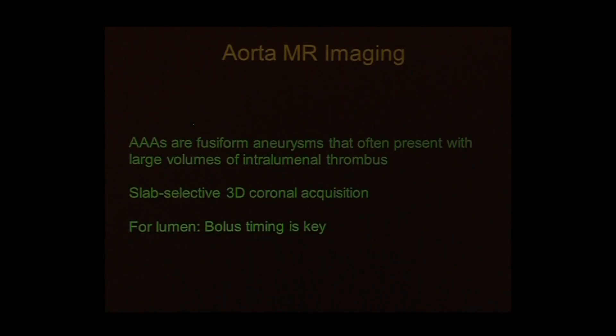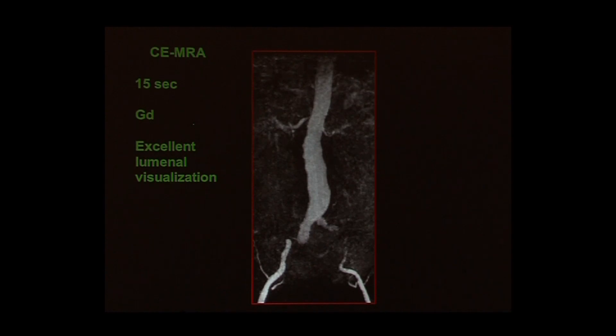For imaging the lumen, we typically perform a volume acquisition in the coronal plane. The key is timing the arrival of the contrast bolus with the acquisition window — approximately a 15-second acquisition delivering an agent such as gadolinium DTPA provides clear anatomical delineation. However, the lumen is not where the disease resides; the disease is in the vessel wall. So luminal imaging is only an indirect indication of what we're really interested in.